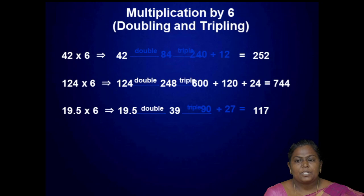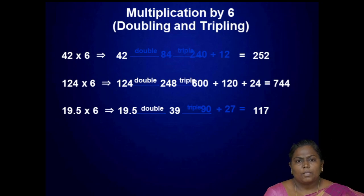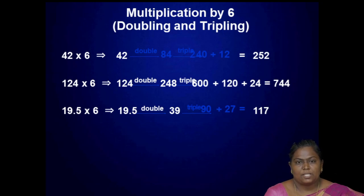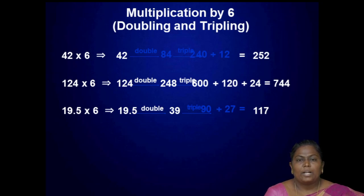Next, multiplication by 6. Here 6 can be split into 3 times 2, so 3 means tripling and 2 means doubling. For given number 42: double to get 84, then triple 84 to get 252. Next, 124 into 6: double 124 to get 248, triple 248 to get 744.